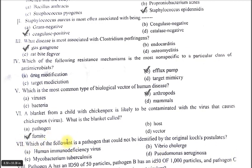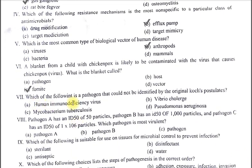Which of the following is a pathogen that could not be identified by the original Koch postulates? The options are A. Human immunodeficiency virus. B. Vibrio cholerae. C. Mycobacterium tuberculosis. D. Pseudomonas aeruginosa. The correct answer is A, HIV — Human immunodeficiency virus, the causative agent of AIDS. Viruses are not covered in the original Koch postulates, so the Koch postulates were modified later on.